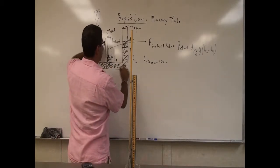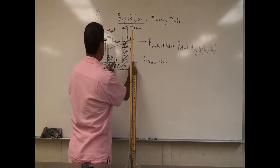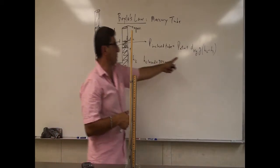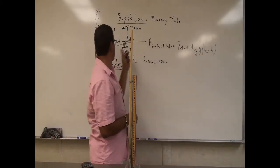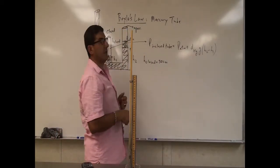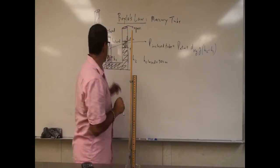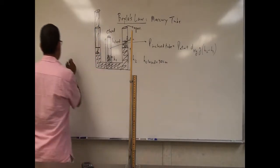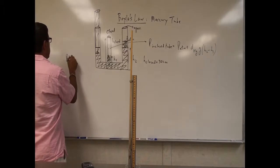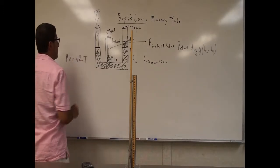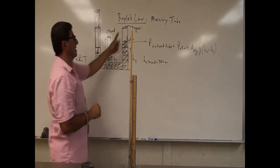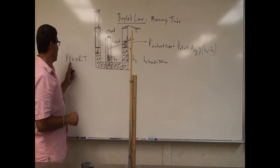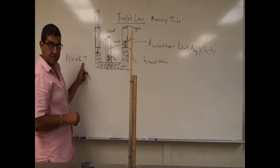I press it down a little bit more, and record the heights. Then using the equation, I'm going to be calculating the pressure in here. And then my eventual goal is to show that the pressure inside of the closed tube — because we have here PV equals NRT.